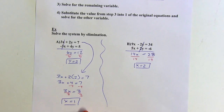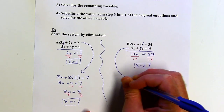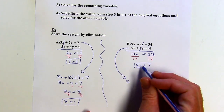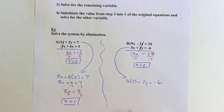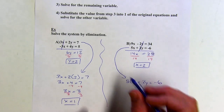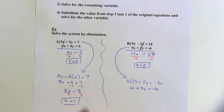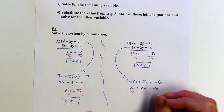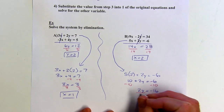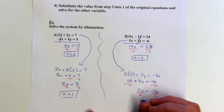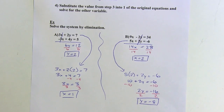Now that I've got x, I go back to one of the original equations. I'll use the second one because the numbers are smaller. So 5 times x — x was 2 — plus 2y equals negative 6. 5 times 2 is 10. Subtracting 10 from both sides gives 2y equals negative 16, then dividing by 2, y equals negative 8. There's my solution; you could write it as an ordered pair.